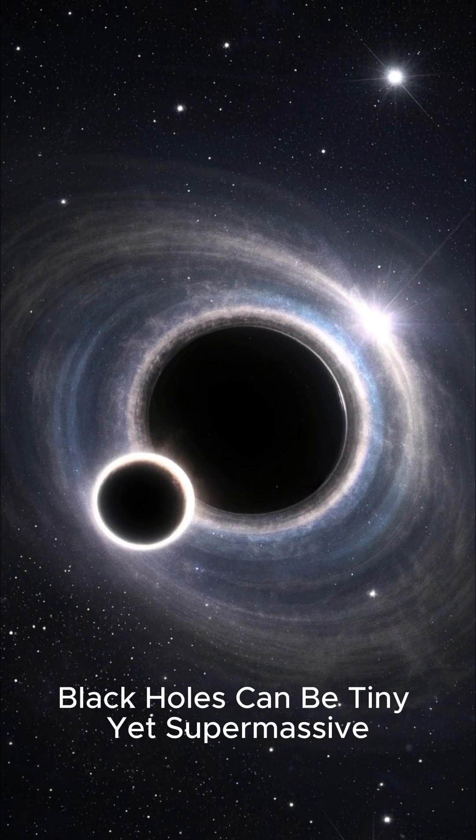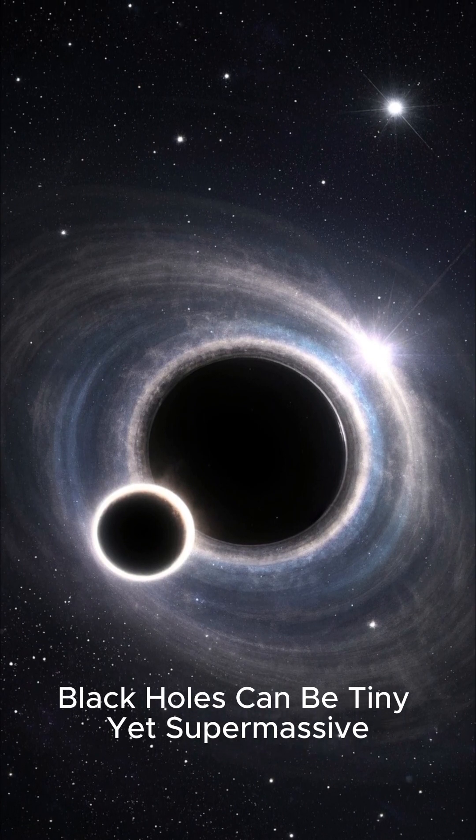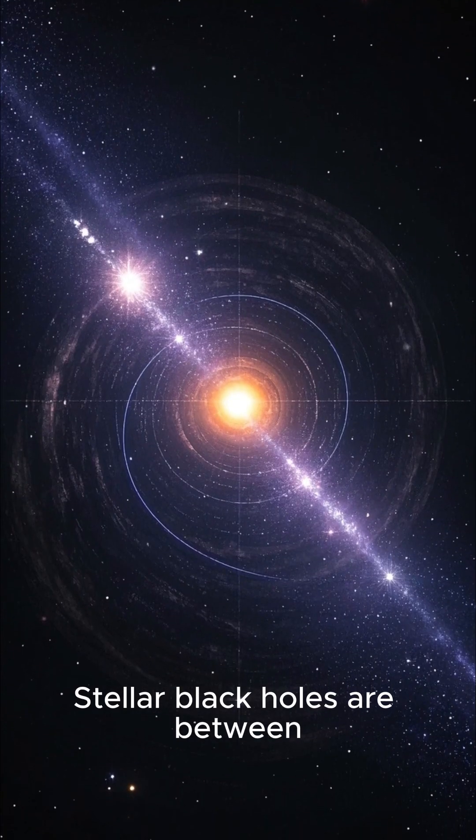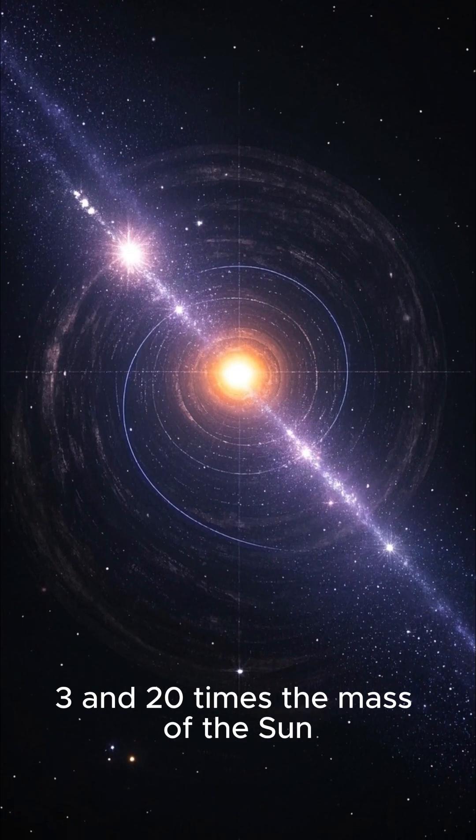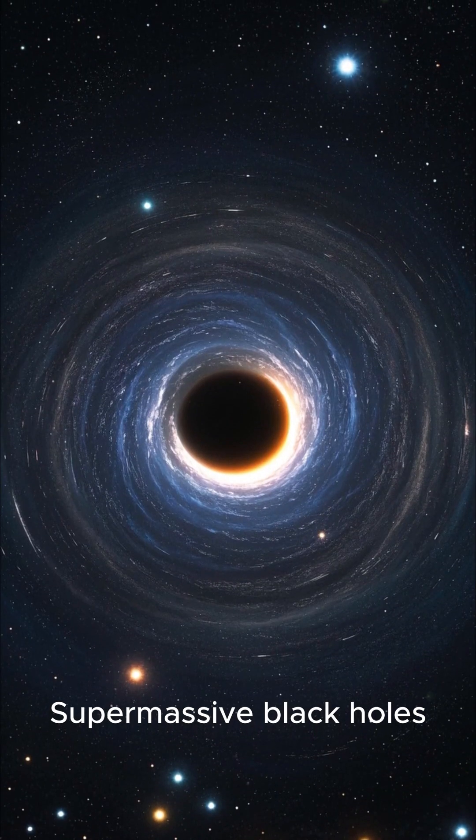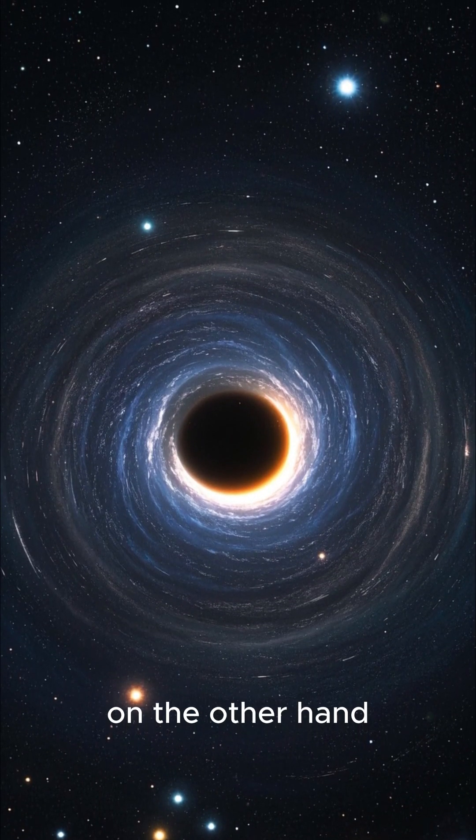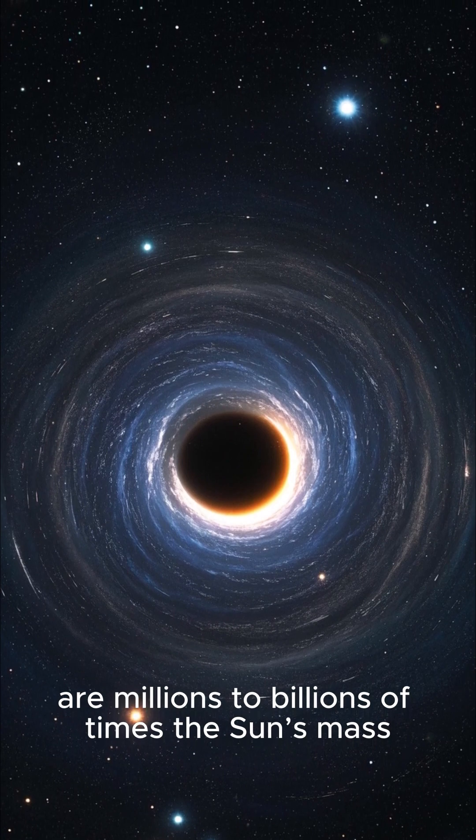Number 4. Black holes can be tiny yet supermassive. Stellar black holes are between 3 and 20 times the mass of the sun. Supermassive black holes, on the other hand, are millions to billions of times the sun's mass.